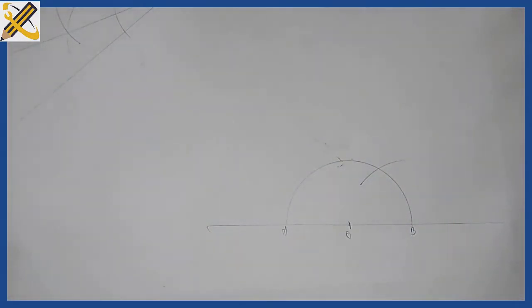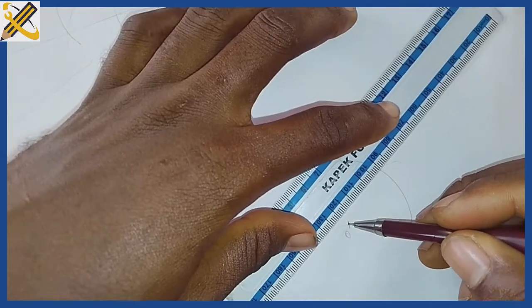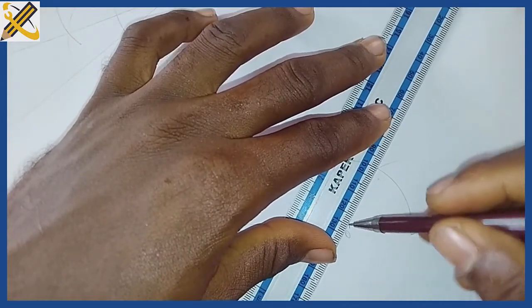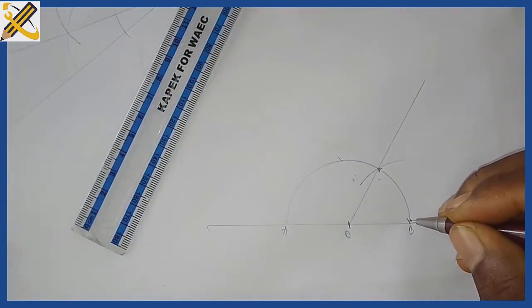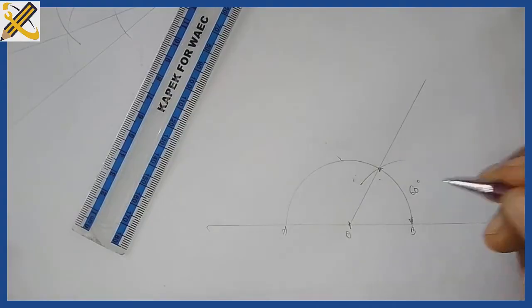Having done that, roll your line through that point. Automatically, the angle from here to here is 60 degrees. Thank you.